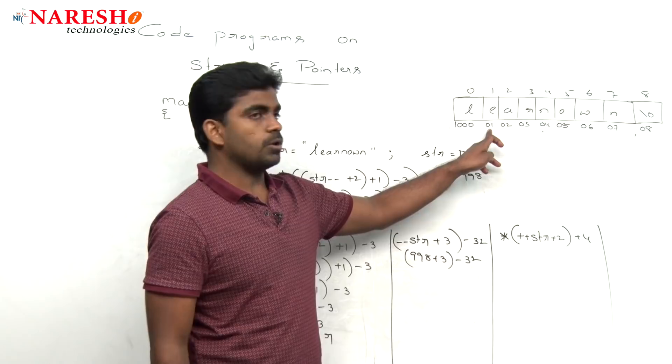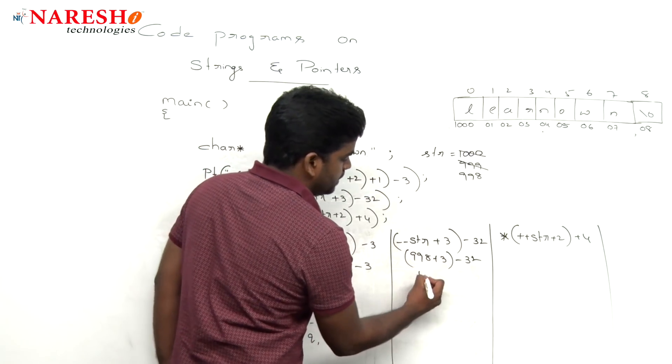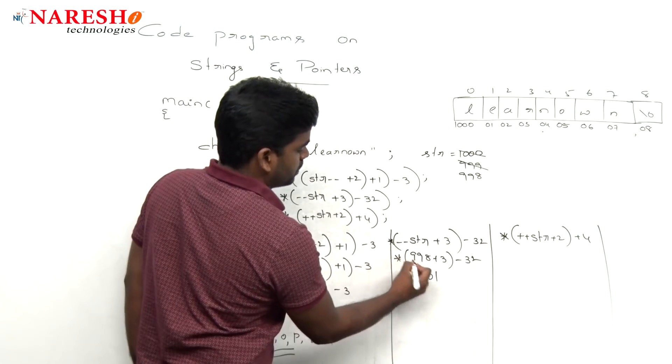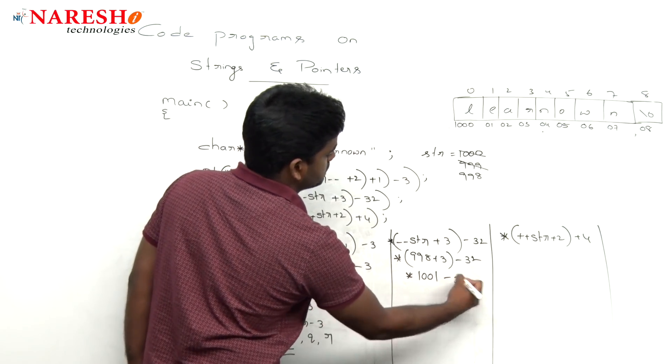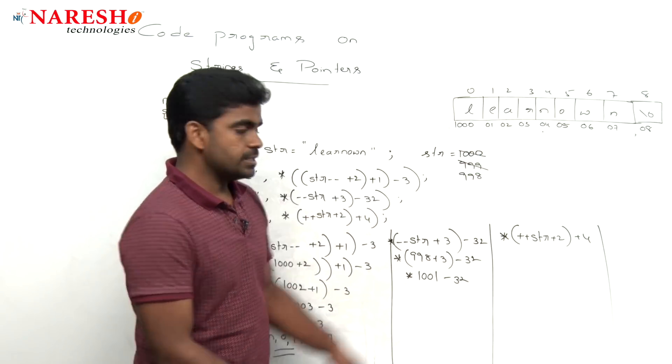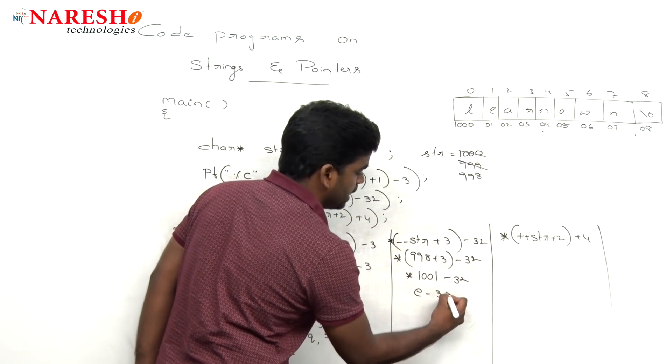998 plus 3, here it is plus 3 value is 1001. It will be increased by only 1 because character size is 1 byte only. Pointer to 1001 minus 32.